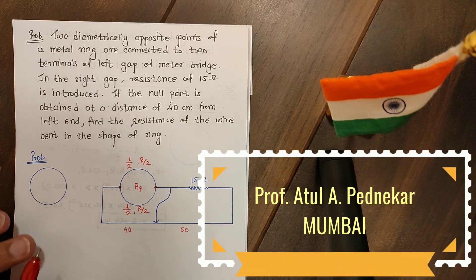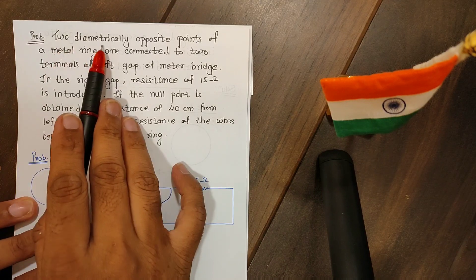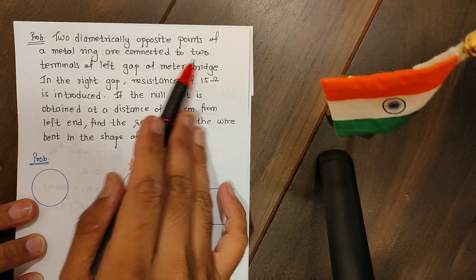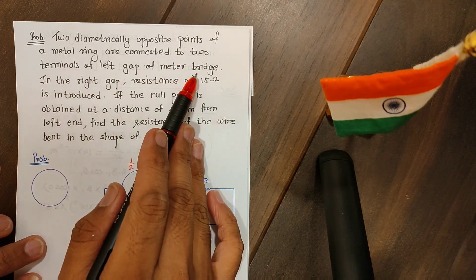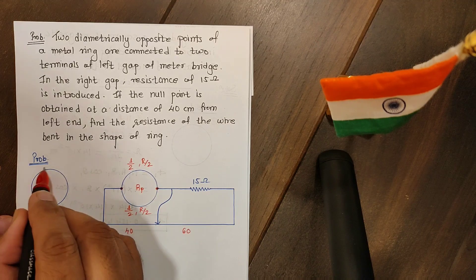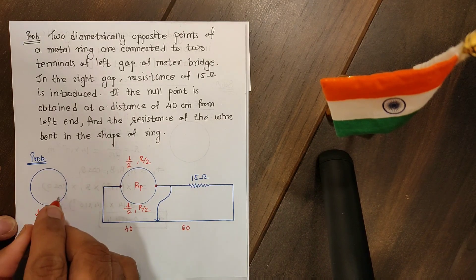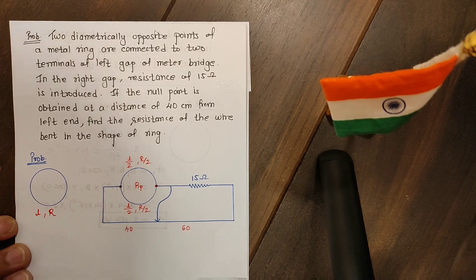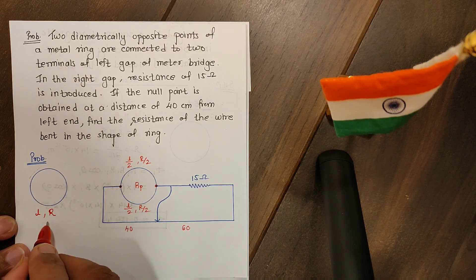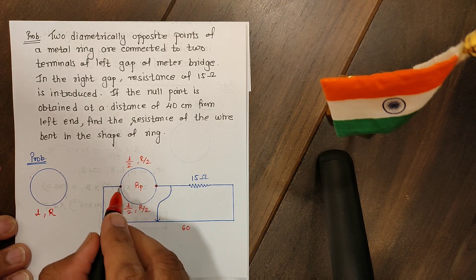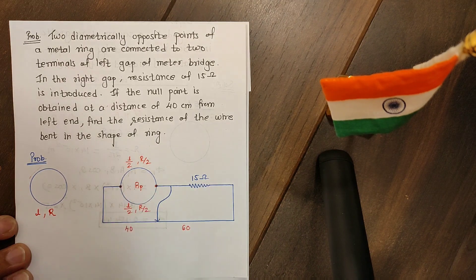Hello students. Let's read the problem. Two diametrically opposite points of a metal ring are connected to the two terminals of the left gap of a meter bridge. We have a circular ring whose entire circumference length is L and the resistance of this complete loop is R. So the circumference length is L and its resistance is R. This ring is connected to the left end of the meter bridge by selecting two diametrically opposite points.